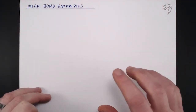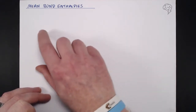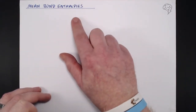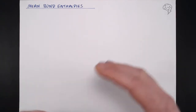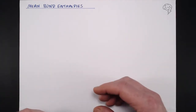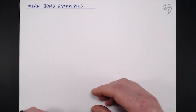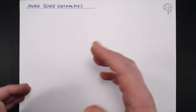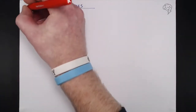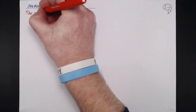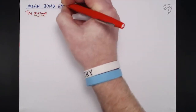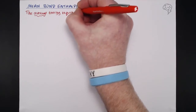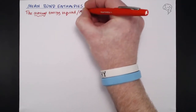In this tutorial we're going to be looking at mean bond enthalpies. Enthalpy is the change in energy during a chemical reaction. Here we're looking at specific bonds — a mean bond enthalpy is the average energy required or released when one mole of covalent bonds are broken or formed.